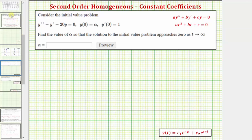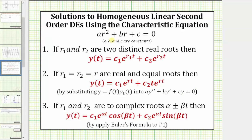For a quick review: if the characteristic equation has two distinct real roots, the general solution is in this form. If it has two real equal roots, the general solution is in this form. If it has two complex roots in the form alpha plus or minus beta, the general solution is in this form.